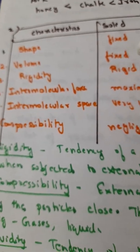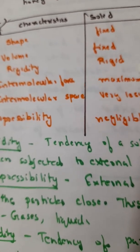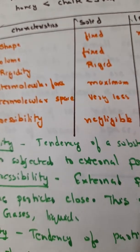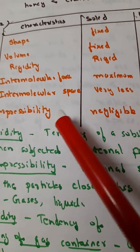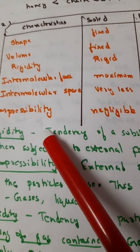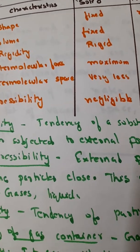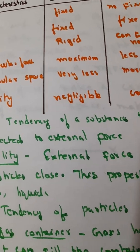For solid you see shape is fixed, volume also is fixed, rigidity is rigid, intermolecular force is maximum, intermolecular space is very less, compressibility is negligible. You can just take a screenshot of this if you want.